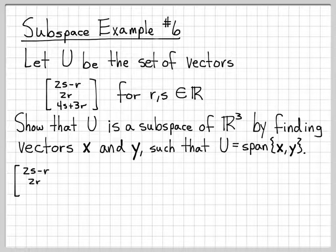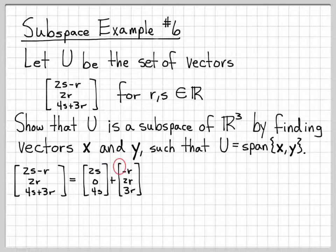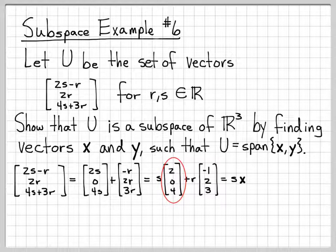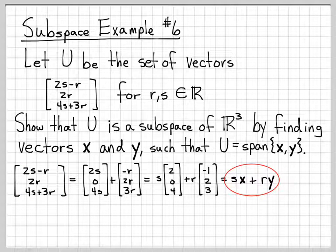Let's find vectors x and y. Writing the general form of vectors in U, we can factor it into an s-part and an r-part. Splitting it up, we factor out s to get s times the vector (2, 0, 4), and factor out r to get r times the vector (-1, 2, 3). So let's define x to be the vector (2, 0, 4) and y to be the vector (-1, 2, 3). We've now written the arbitrary element of U as a linear combination s·x + r·y.